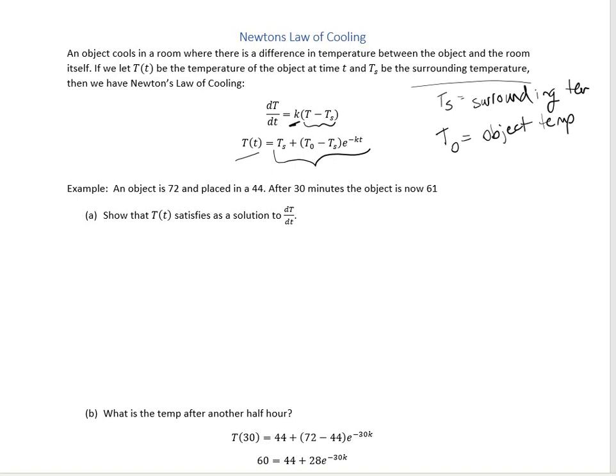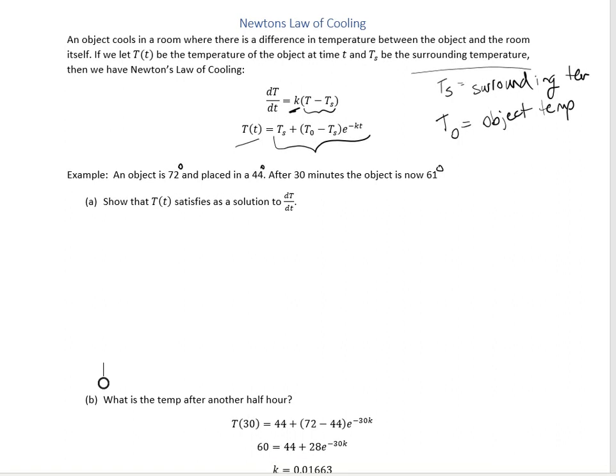For example, say an object is 72°F and is placed in a 44°F refrigerator. After 30 minutes the object is now 61°F. The first thing we want to show is that our function T(t) satisfies the cooling derivative equation.